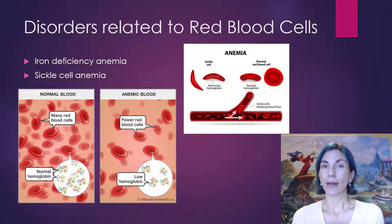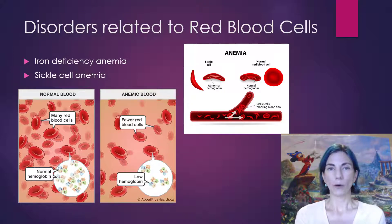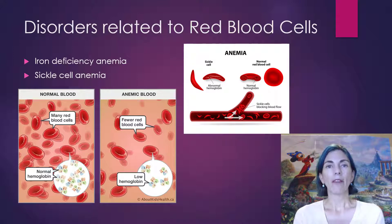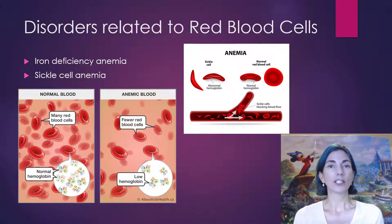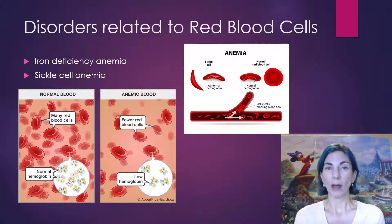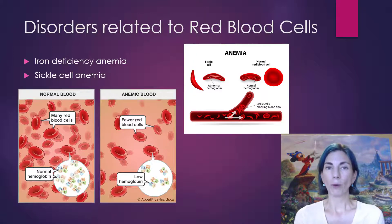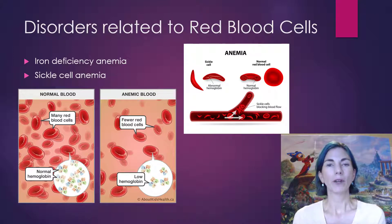I'll start with red blood cells. The most common disorder associated with red blood cells is anemia. The term anemia by definition means too little hemoglobin — so the hemoglobin levels are too low. There can be a number of causes for anemia; there's no one cause. Multiple causes all lead to the same outcome, which is too little hemoglobin.